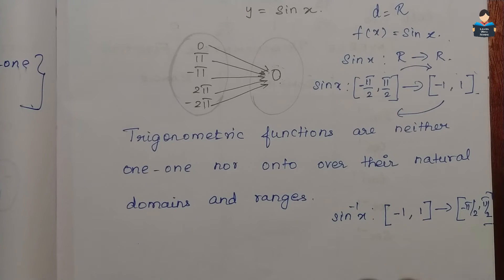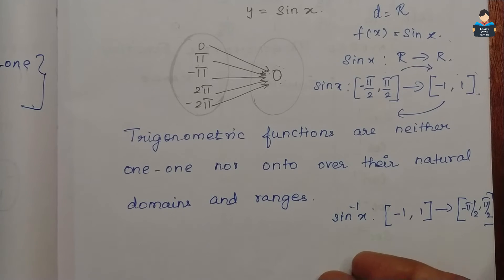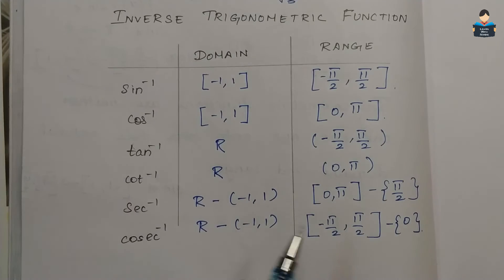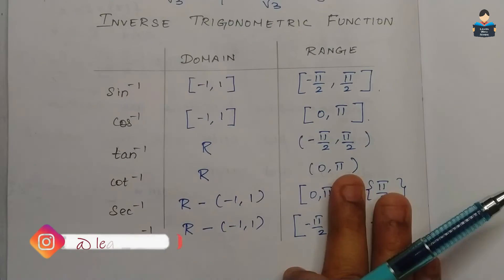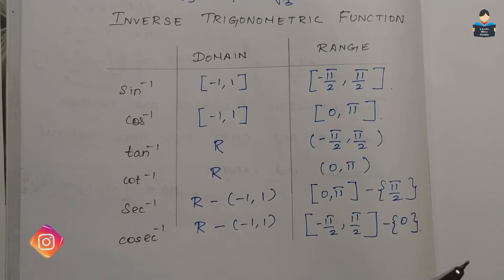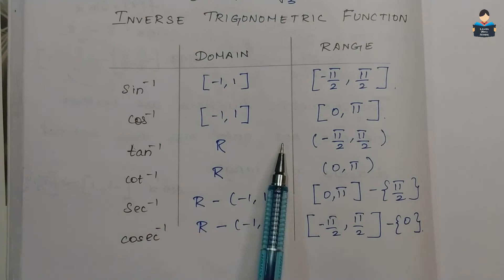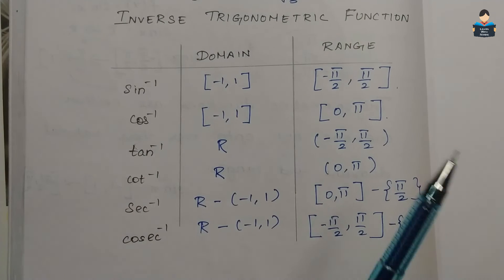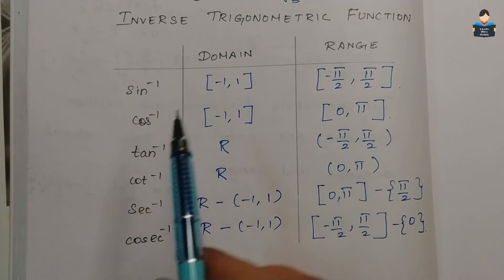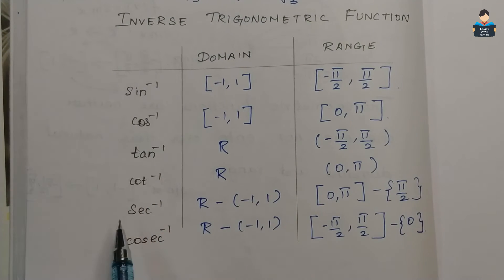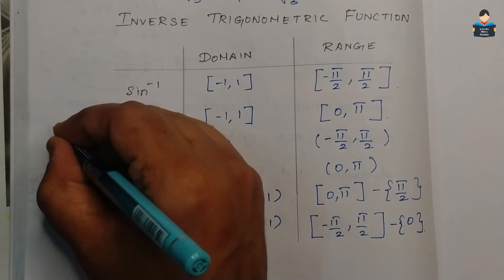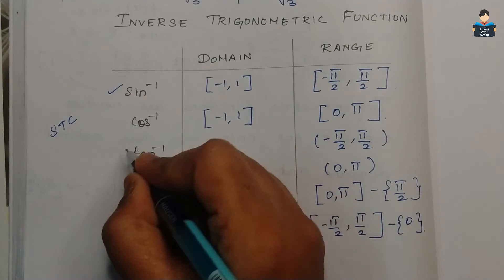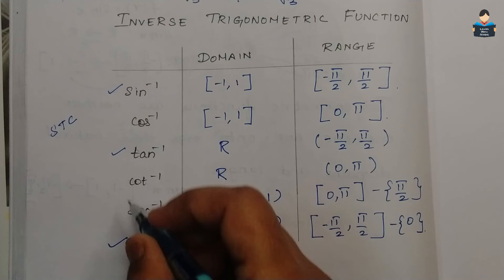This table is very important. Based on this table we will solve the sums, so we need to memorize it. The functions are grouped into two sets: the first set is sin, tan, cosec — and the second set is cos, cot, secant.